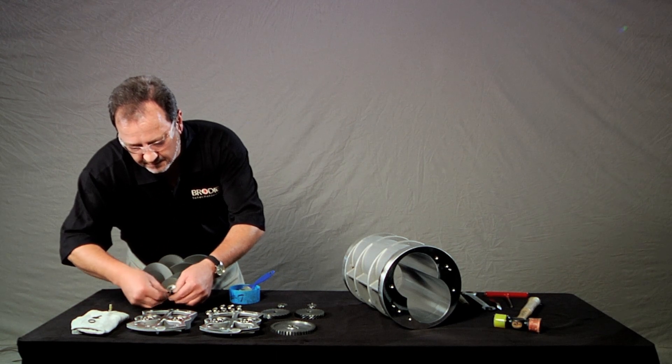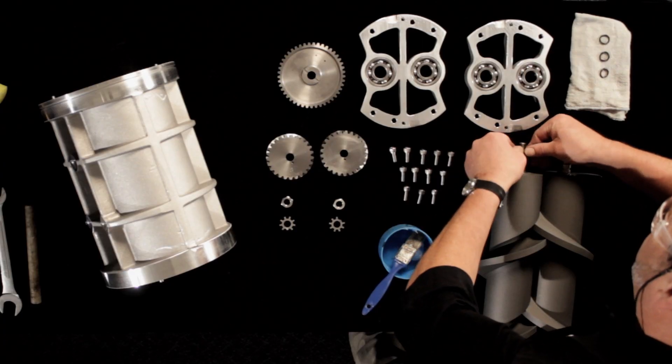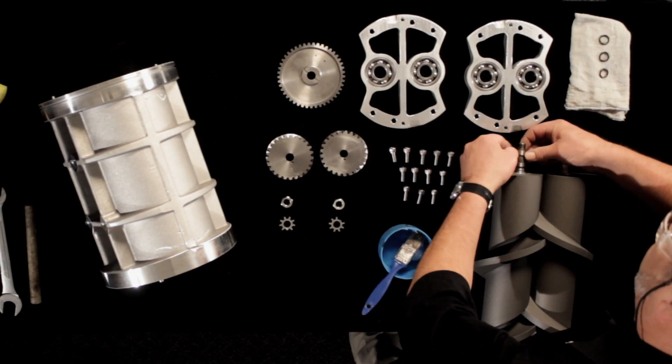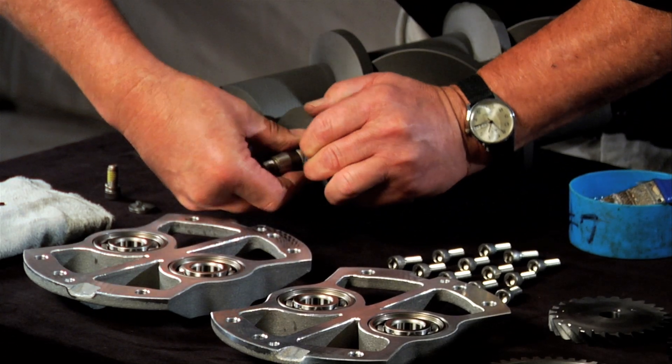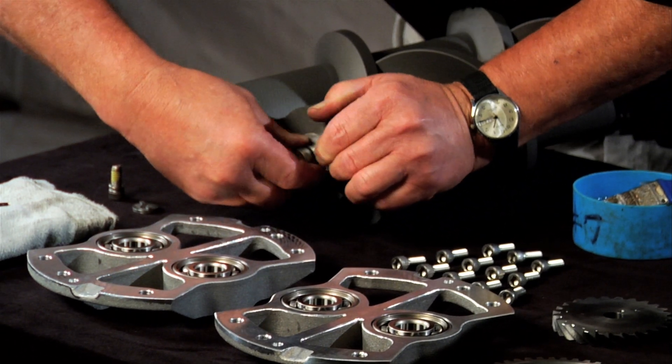First attach the o-rings to the rotor shafts. There are four o-rings, one for each end of each rotor shaft. Roll the o-ring into the groove. It should be a tight fit.